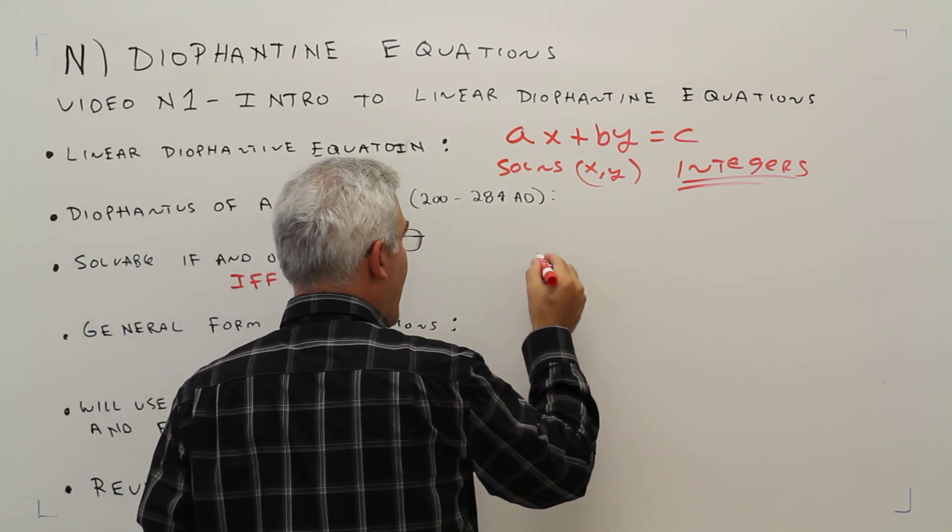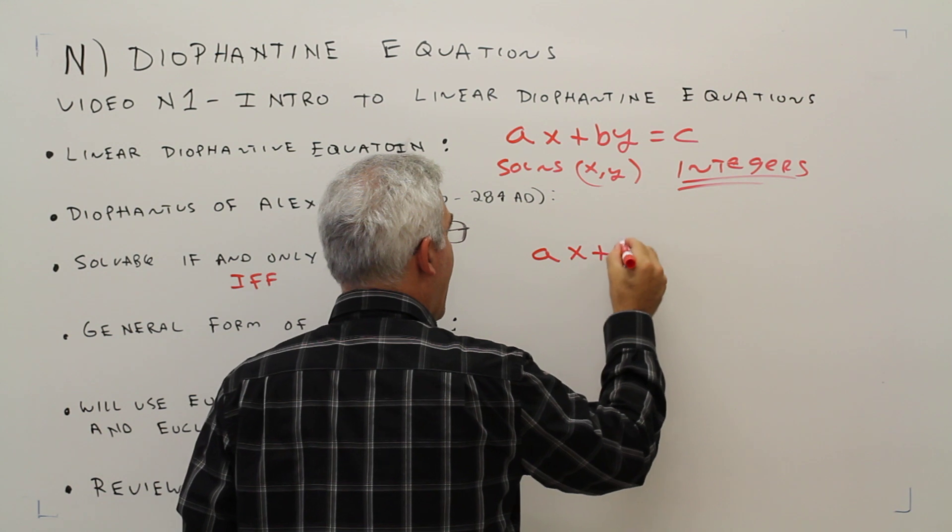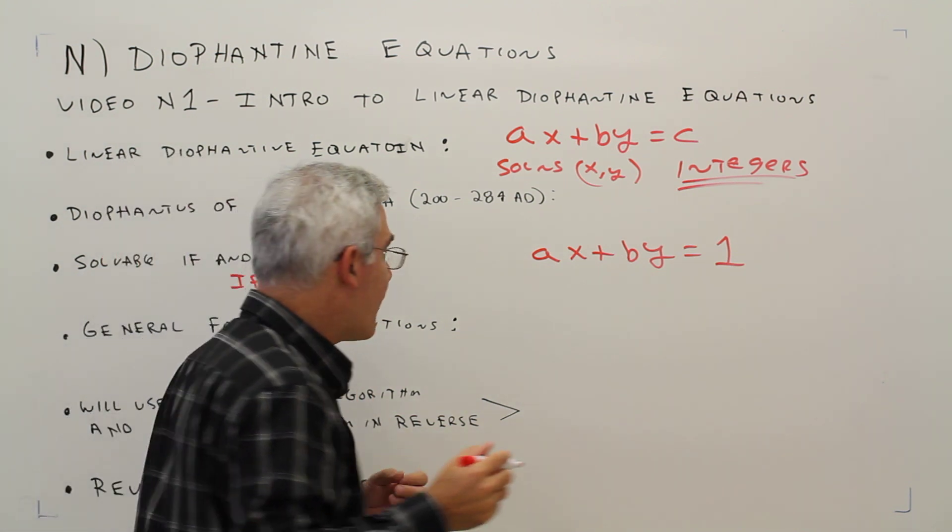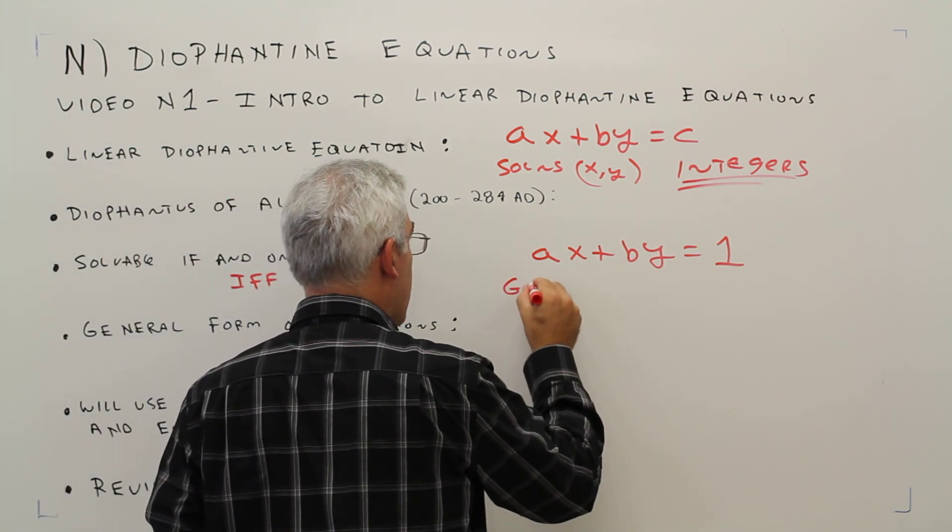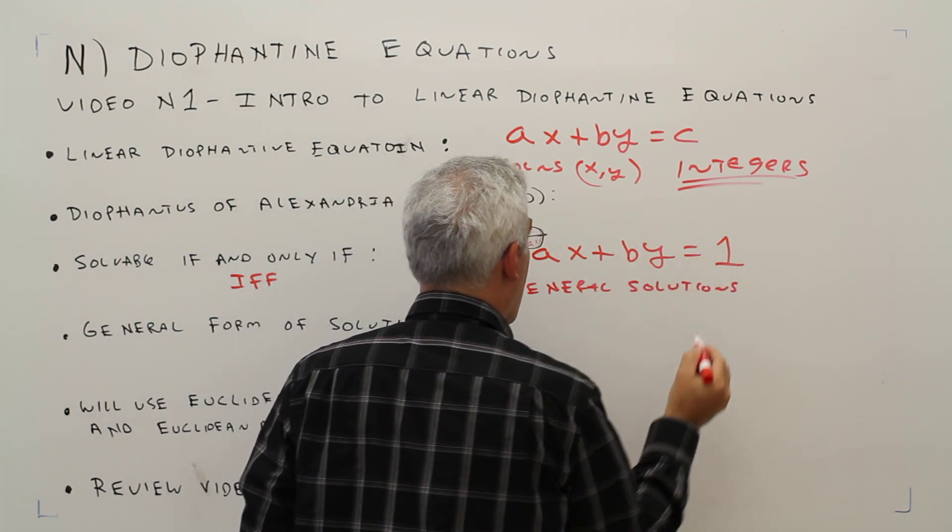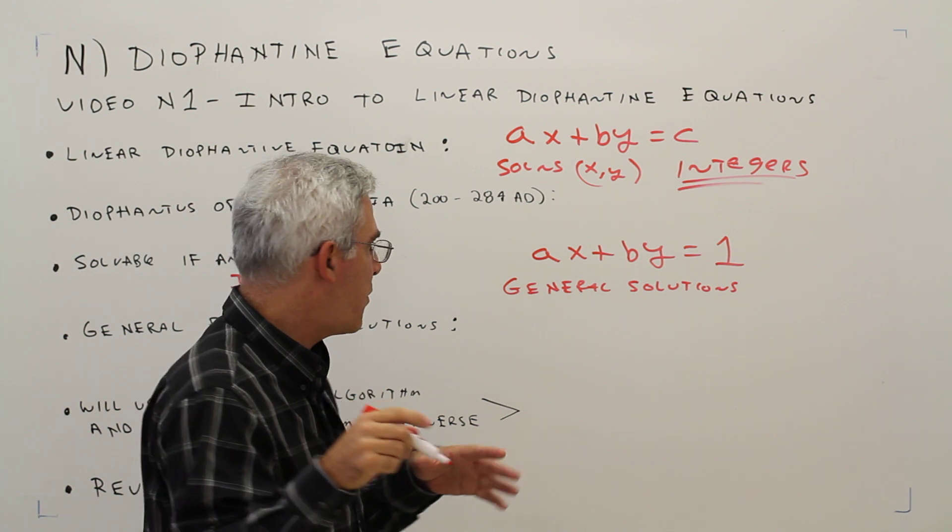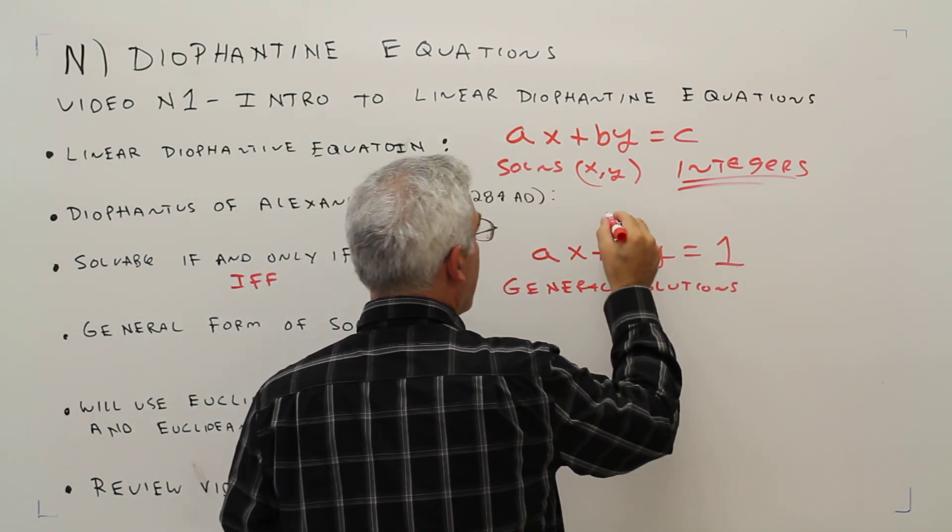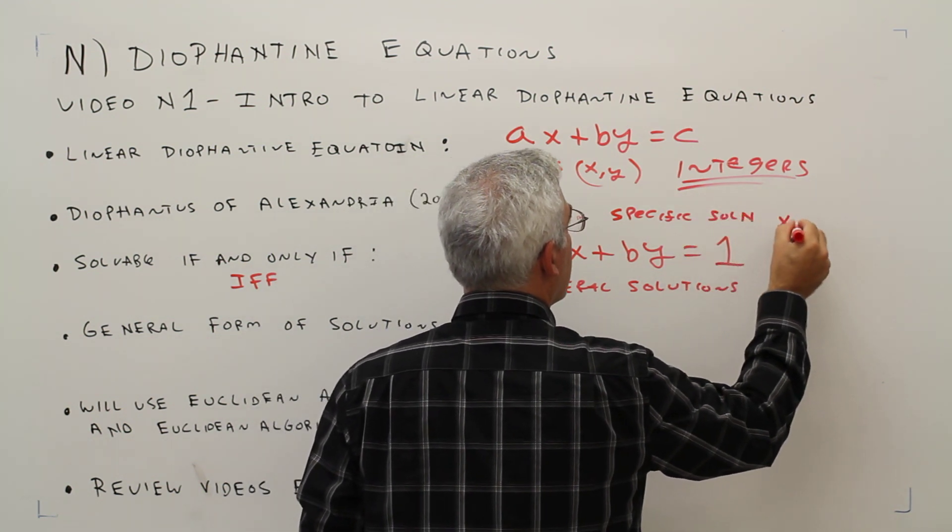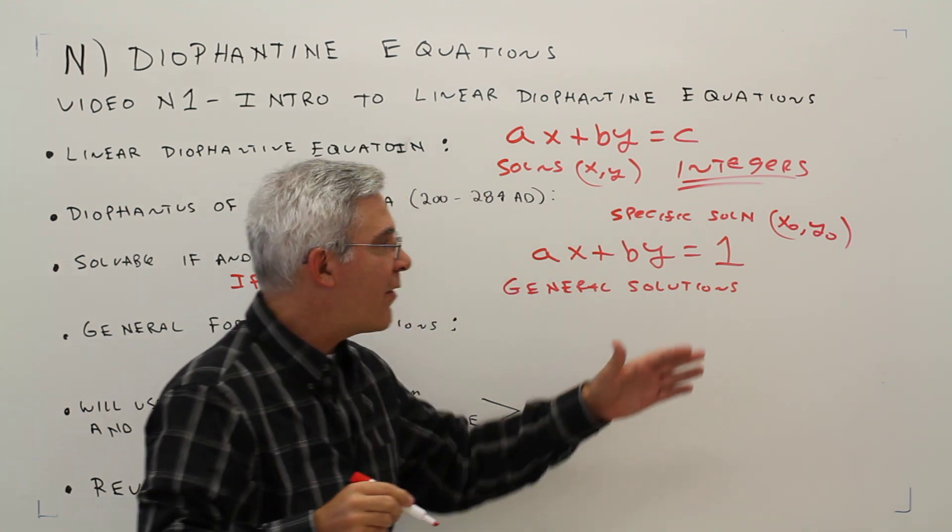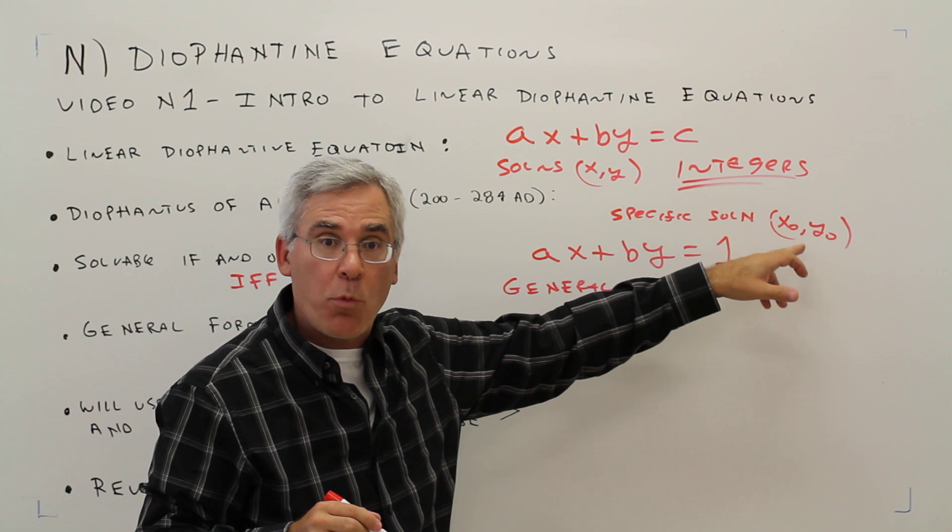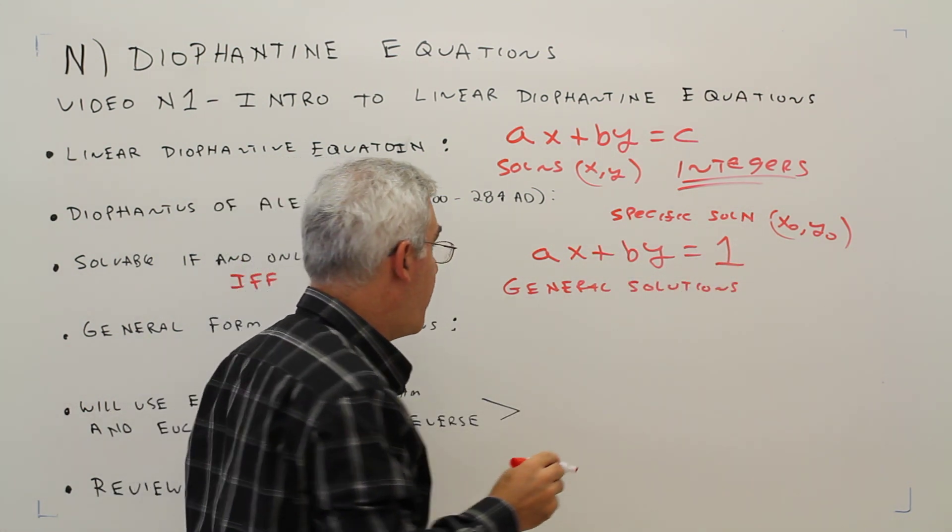So the general form of the solutions. Let's start with an equation of this form, AX plus BY equals 1. The general solutions. First, let me talk about the specific solutions. Specific solution. Because when we do this process, we're going to first find a specific solution. So, we'll call the specific solution X naught, Y naught.